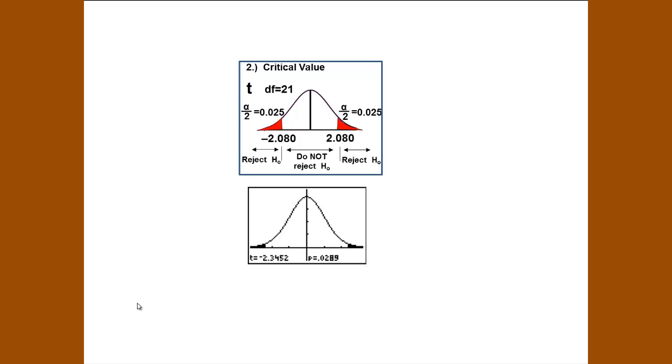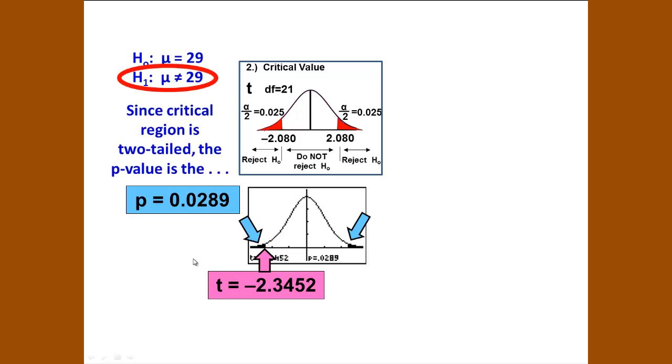Now let's just look at the graphs. How do the graphs compare? On the p-value approach, the graph is showing a t equaling negative 2.3452 here to the left and 2.3452 to the right. And the area to the left and to the right combined gives us 0.0289. That's the area in 2 tails. Since it's not equal to, since the critical region is a 2-tailed, the p-value is the combined area of the 2 tails at the plus or minus t values.